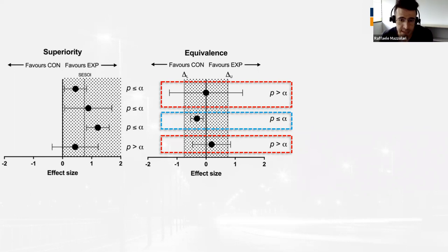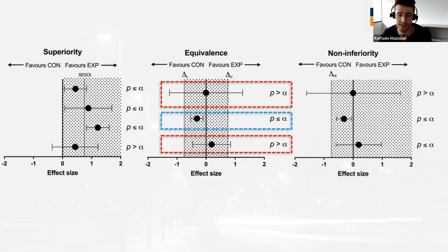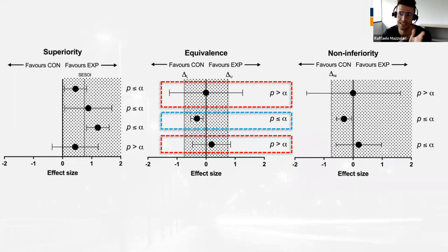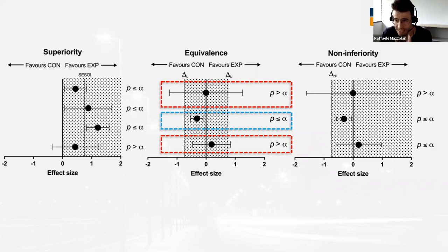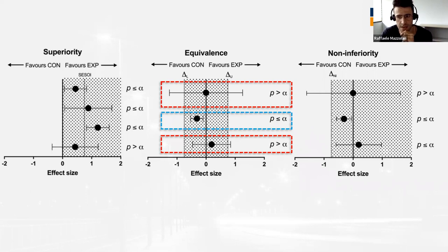Now moving to non-inferiority tests. If there is an interest and strong rationale — specified a priori before starting the study — to investigate whether a generally new intervention is not unacceptably worse than a standard, with no restriction on its maximum efficacy, you might consider a non-inferiority design. This might be the case when the new intervention is cheaper, safer, easier to implement, and less challenging than the standard. In sports science, several scenarios come to mind: simulated versus real altitude training, highly individualized versus more standardized training protocols, and standard prescriptions versus lower-dose alternatives.